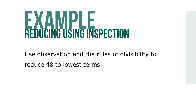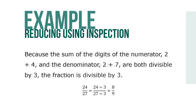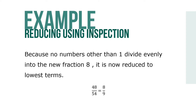Let's use observation and the rules of divisibility you just saw to reduce 48 to lowest terms. Because the last digit of the numerator is 8 and the last digit of the denominator is 4, they're both divisible by 2. Because the sum of the digits of the numerator 2 plus 4 and the denominator 2 plus 7 are both divisible by 3, then the fraction is divisible by 3. Because no numbers other than 1 divide evenly into the new fraction 8, it's now reduced to lowest terms.